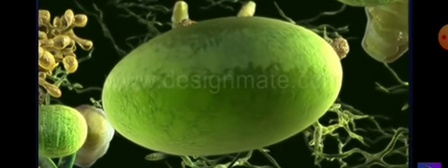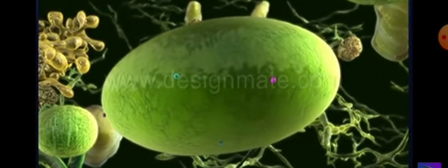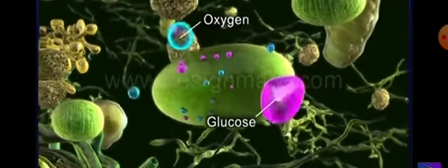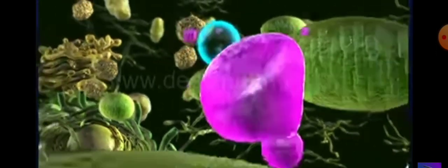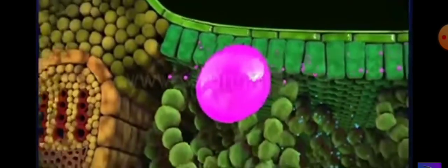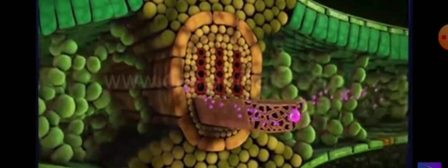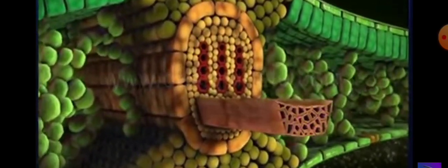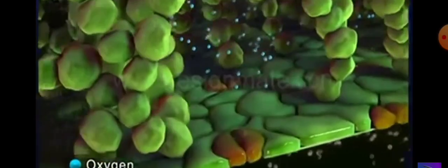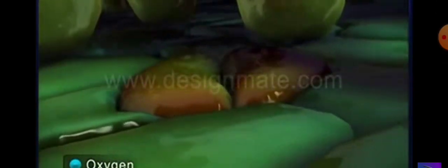These oxygen and glucose molecules diffuse out of the chloroplasts. The glucose is transported through other specialized tubes to all parts of the plant aiding in their growth. The oxygen present in these air spaces diffuses out through the stomata.